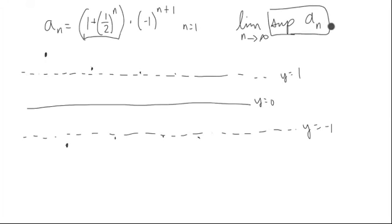Let's look at an example of the sequence a sub n equal to this right here. We're going to assume that it starts at n equals 1. Notice that it'll actually bounce around up here, down here, and so forth.